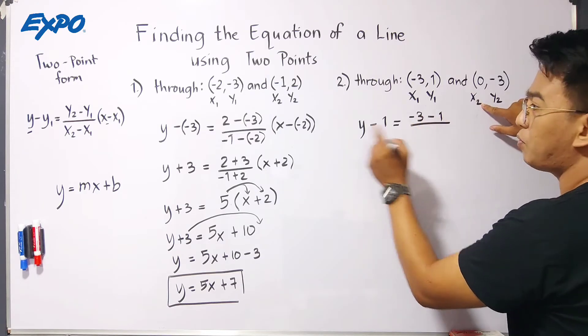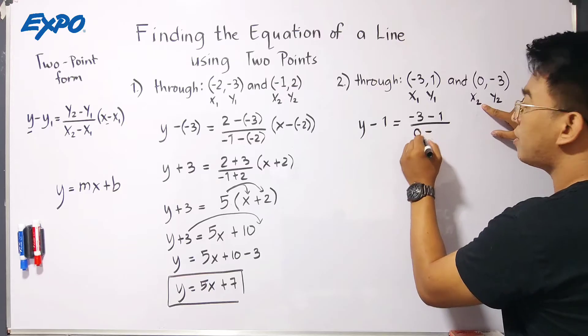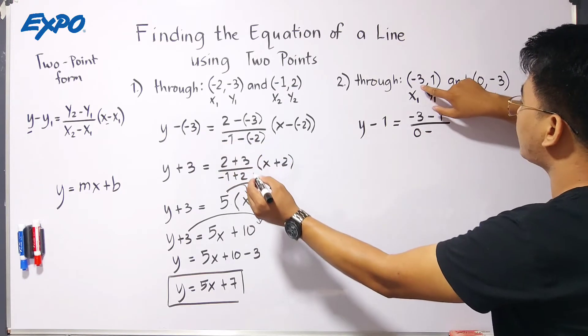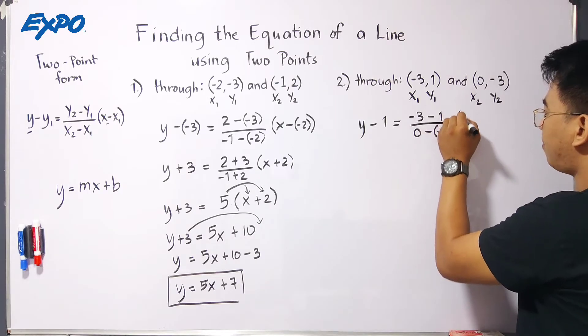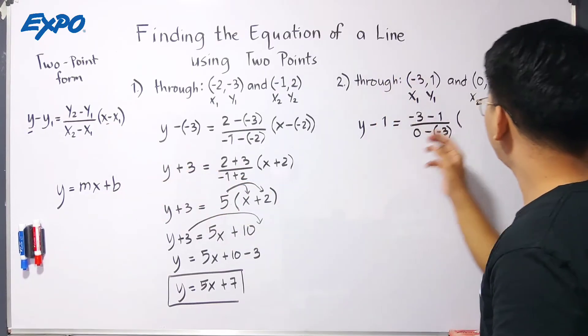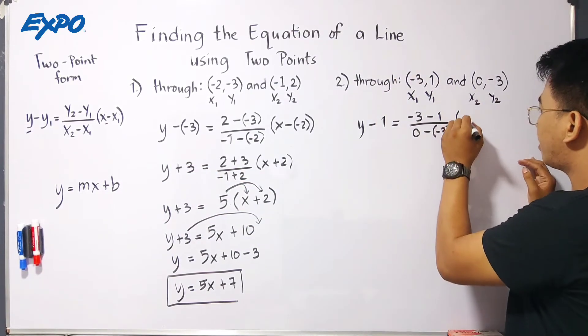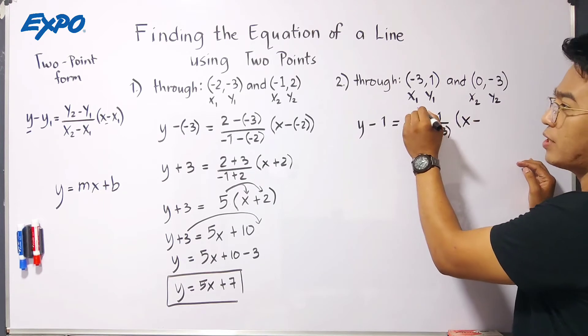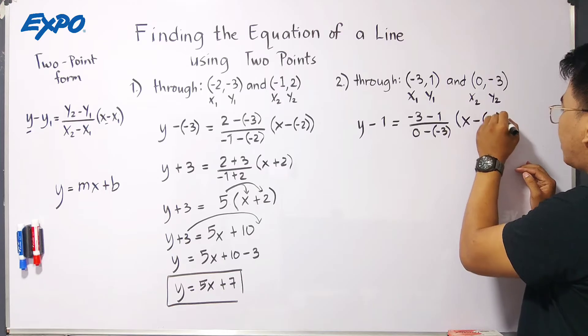Over your x sub 2, which is 0. Minus your x sub 1, which is negative 3. So, we will use parenthesis here, negative 3. Times x minus x sub 1. So, we have x, which is x minus your x sub 1, which is negative 3. So, we will enclose it by parenthesis since this is negative.